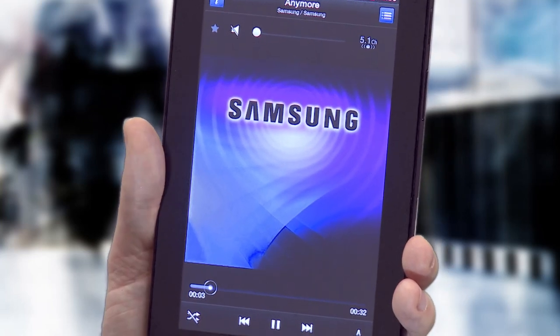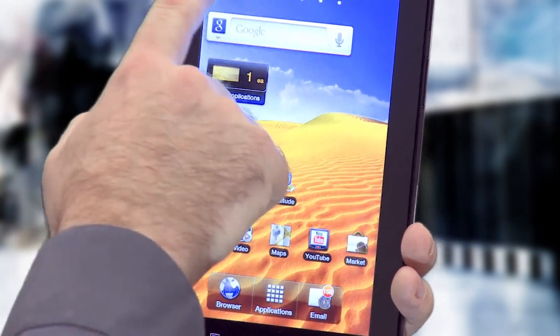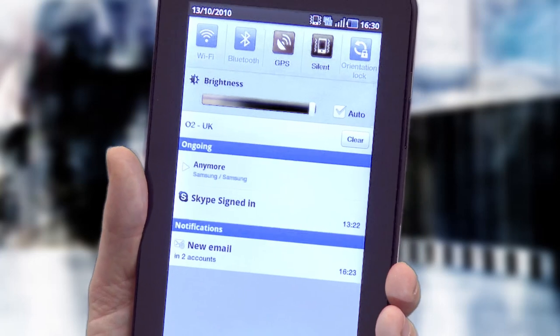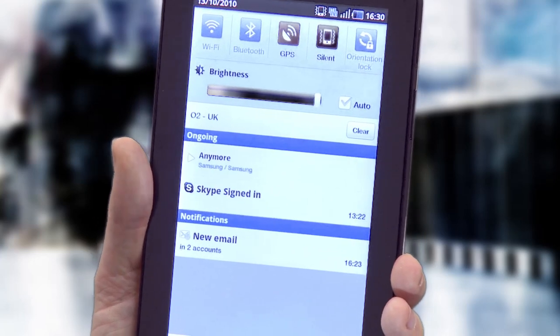I'll choose something to play. And then if I go home, you can hear that that's playing in the background. If I just drag this down here, I can see it, and access the menu, and stop it.